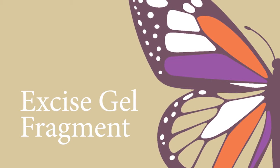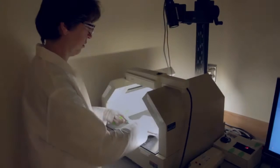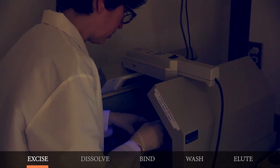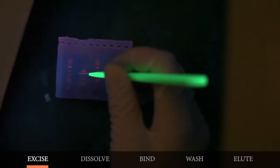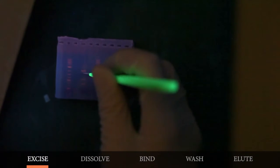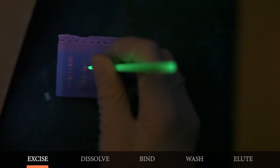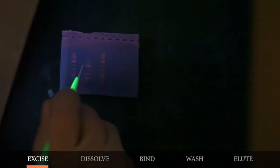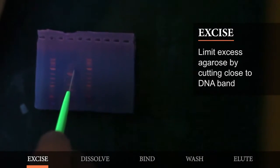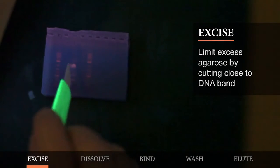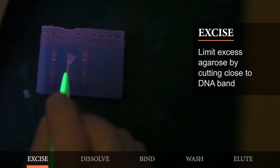The first step of the protocol is to excise the gel fragment. Visualize the DNA fragment of interest under UV light and excise it from the gel using a razor blade, scalpel, or other tool. Try to cut the agarose as close to the DNA fragment as possible to avoid excising excess agarose and limit UV exposure as much as possible.